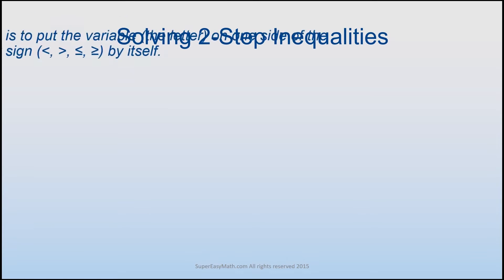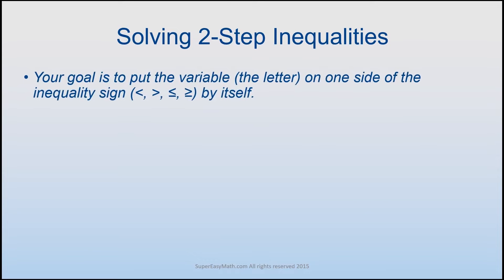Solving two-step inequalities. When solving two-step inequalities you want to remember that your goal is to put the variable, which is a big fancy way of saying the letter, on one side of the inequality sign by itself. The inequality signs are the formal way of saying the less than, greater than, greater than or equal to, less than or equal to signs.